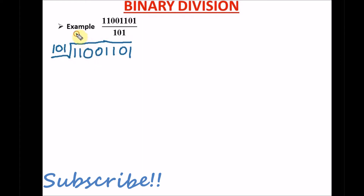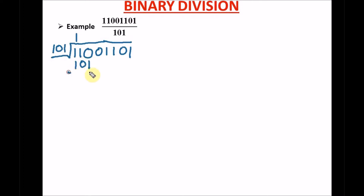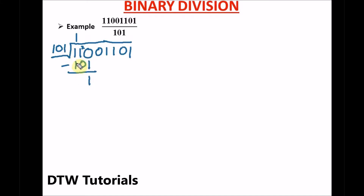So we write a 1 in the quotient, and 1 times 101 gives us 101. Remember, this is binary division, so when we subtract we are in base 2. Let's subtract: 0 minus 1 — we can't subtract, so we borrow a 1, and that borrowed 1 is worth 2 in binary. So 2 minus 1 gives us 1.